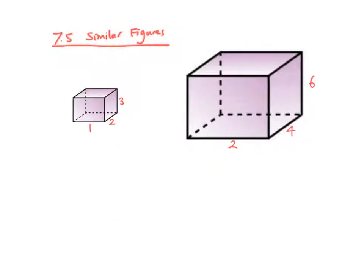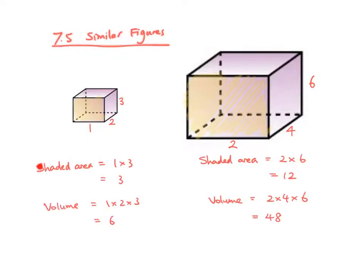For example, if you see that each part is multiplied by 2 from the left figure to the right figure, you can calculate the shaded area for each figure. You can see that the shaded area is 3 and 12 respectively. And then for the volume, it is 6 and 48 respectively. You can see that although the length ratio is 1 to 2, the shaded area will become 4 times, and the volume will become 8 times.